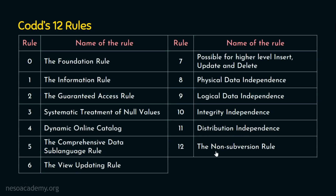Rule number 12 is the non-subversion rule. If a relational system has a low-level language — one that processes a single record at a time — that low-level language cannot be used to subvert or bypass the integrity rules or constraints expressed in the higher-level relational language, which can process multiple records at the same time. We are now done dealing with all 13 rules, which define what is required from a DBMS to be considered a relational database management system.